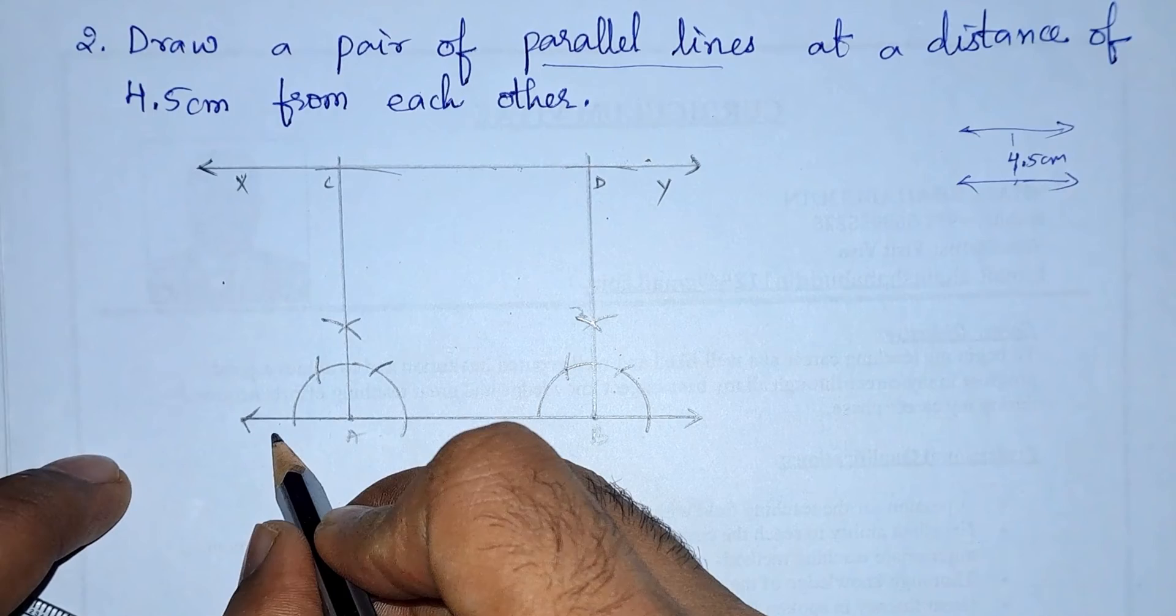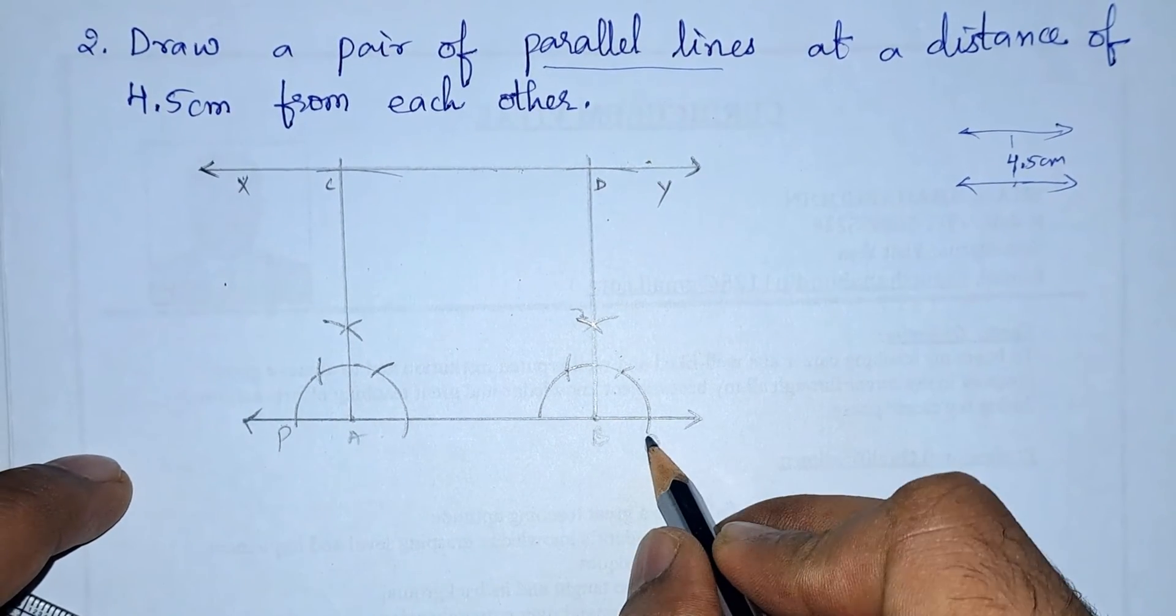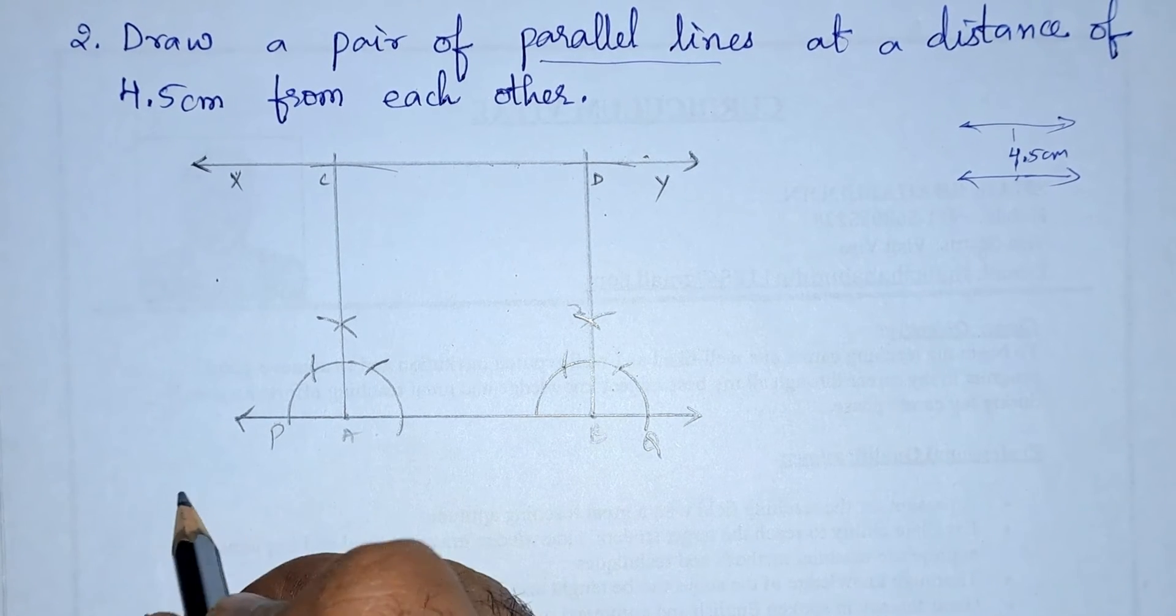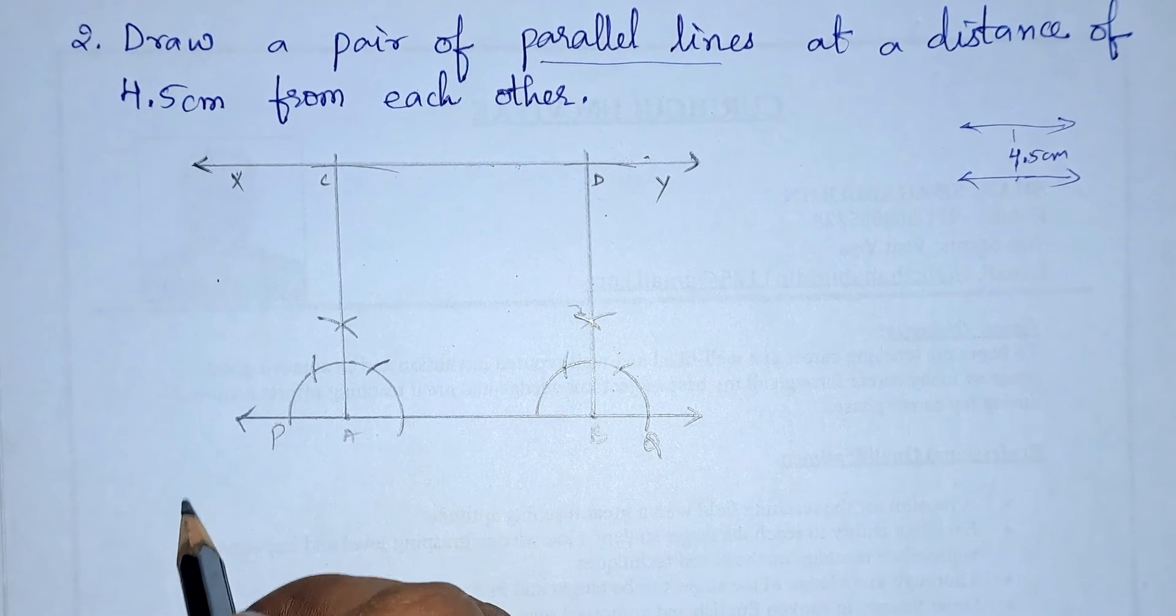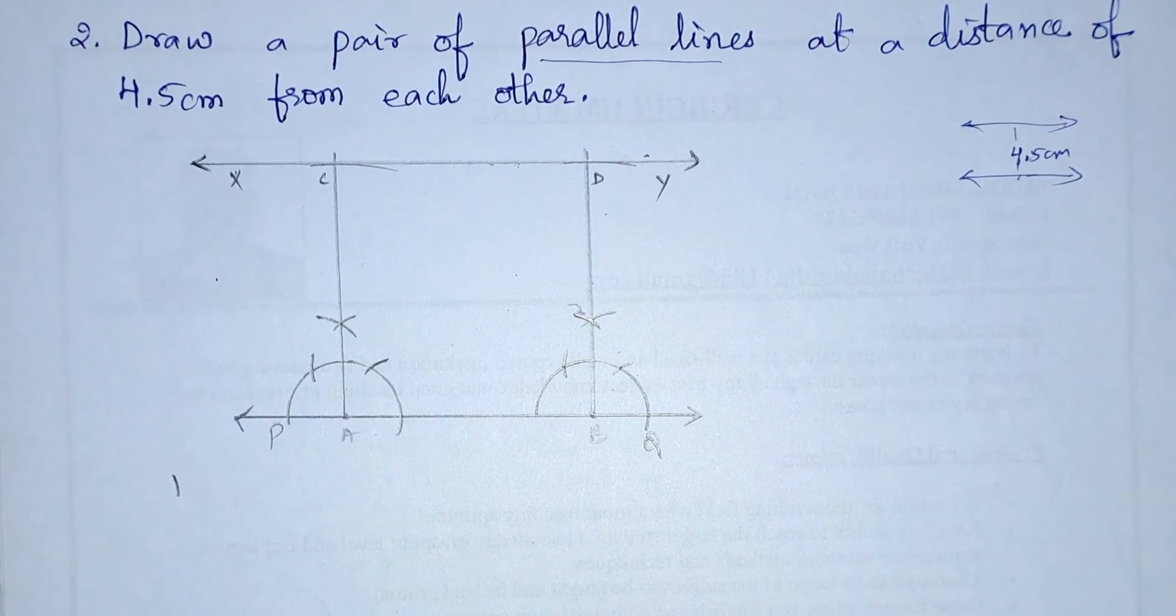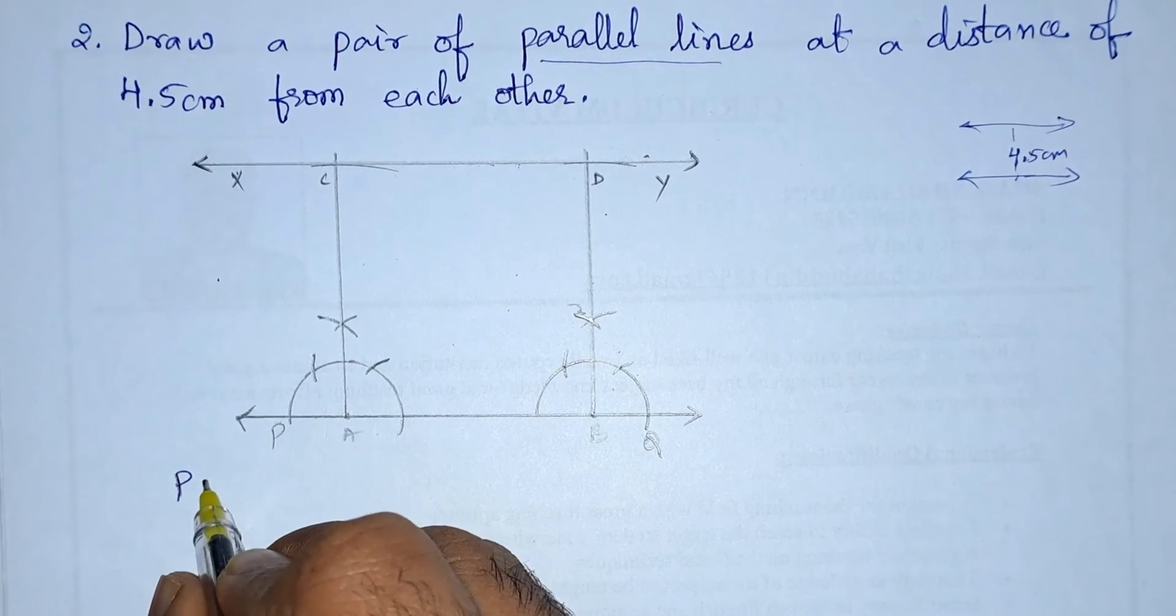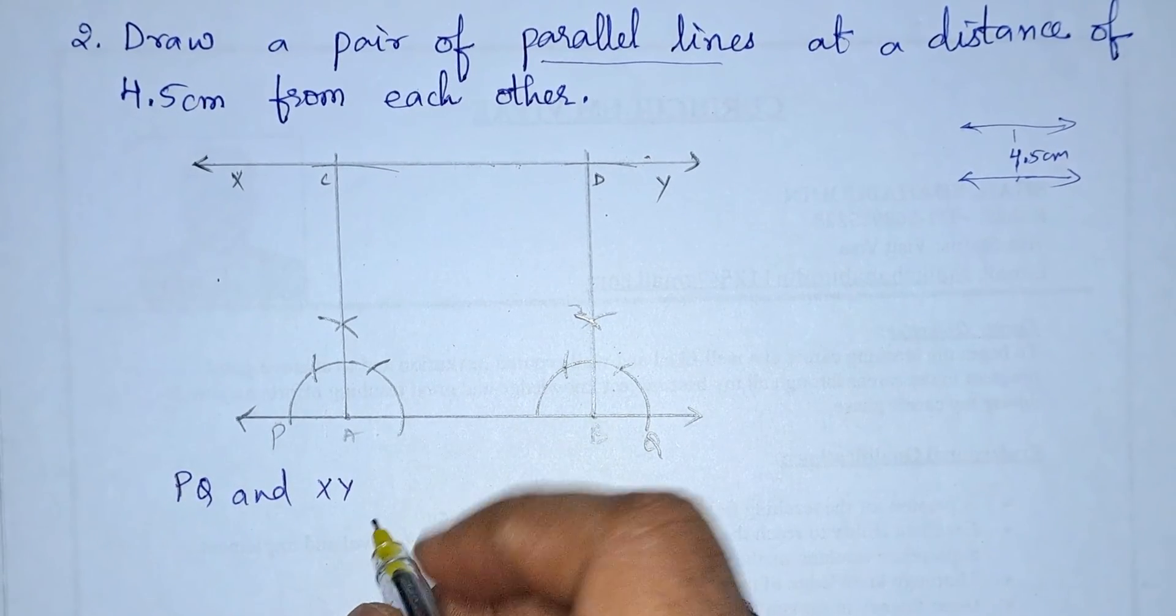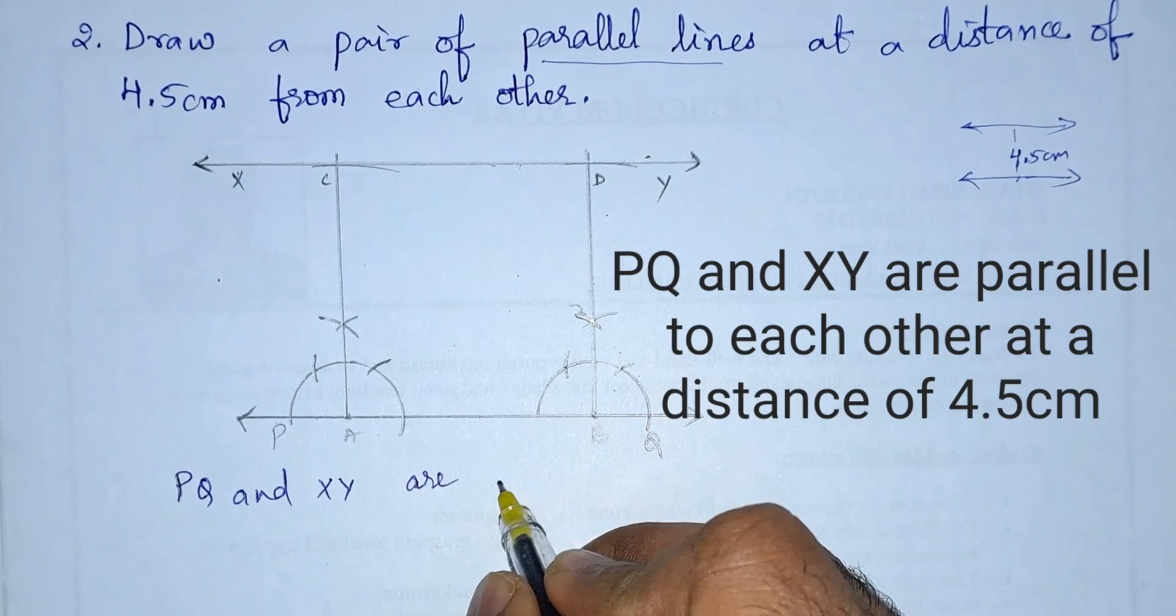And this line PQ. So finally we can say that AB, or ABCD, or you can say PQ and XY. So PQ and XY are the parallel lines.